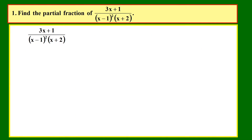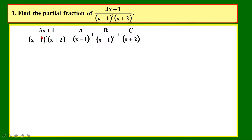Let's find the partial fraction for this question. Before you can do so, let's check whether the degree of the numerator is less than the degree of the denominator. Once that is confirmed, make sure that the denominator has been factorized completely. Then the next step is making sure that you have the correct format. Because this is a repeated factor, we are going to have a over (x minus 1) plus b over (x minus 1) squared plus c over (x plus 2).